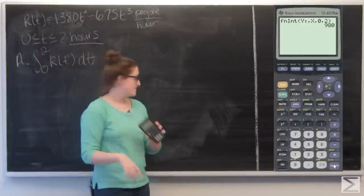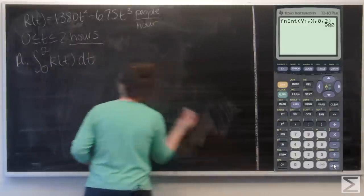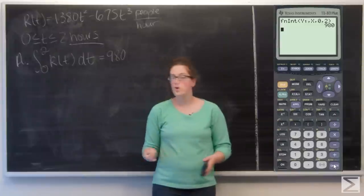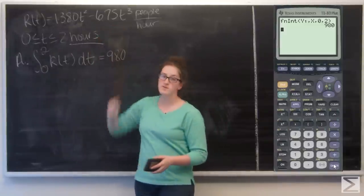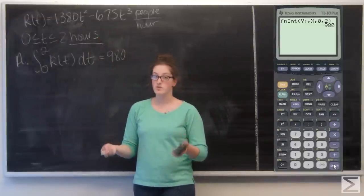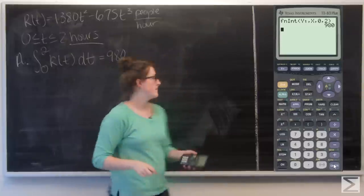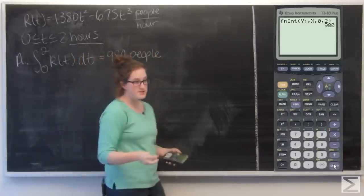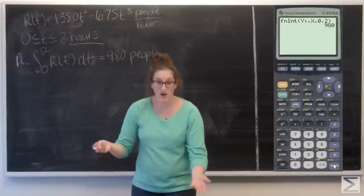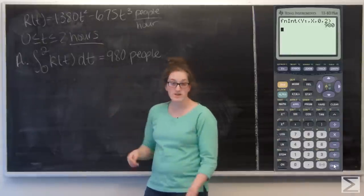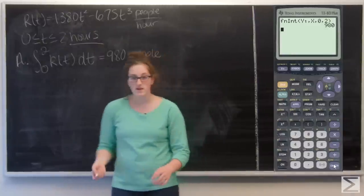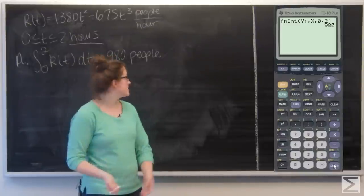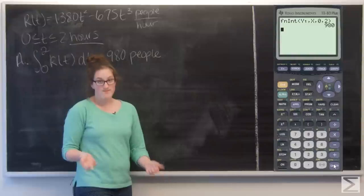It gives me 980. r of t was in people per hour and I integrated with respect to hours, so this is 980 people. At time t equals 2 when the concert begins, there are 980 people in the auditorium.